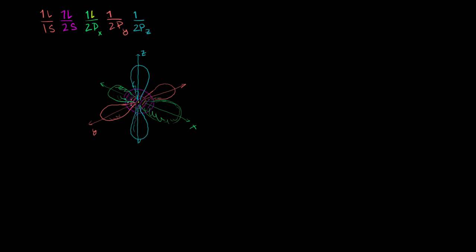Now given what we just reviewed, let's think about what's happening with carbon. Carbon has six electrons. Its electron configuration is 1s2 - two electrons in the 1s orbital - then 2s2, then 2p2. It only has two left because it has a total of six electrons.